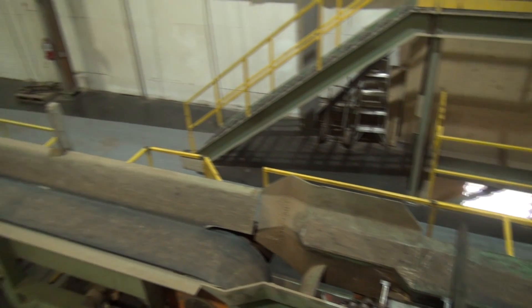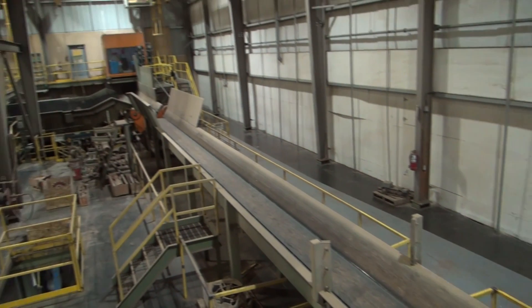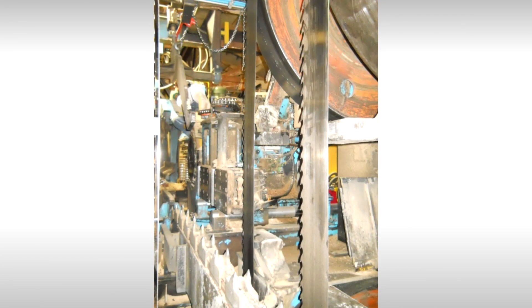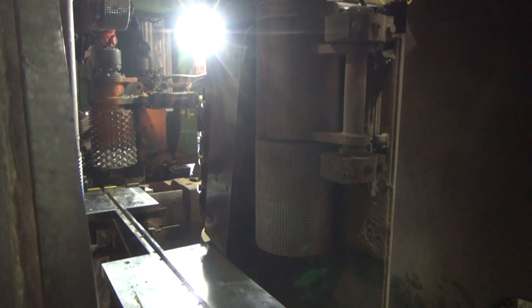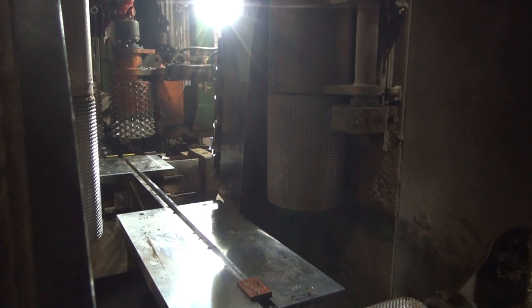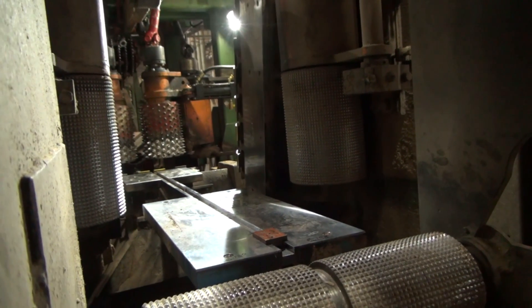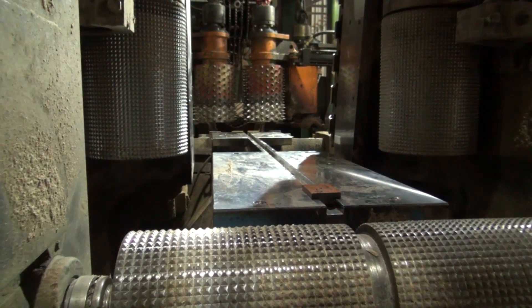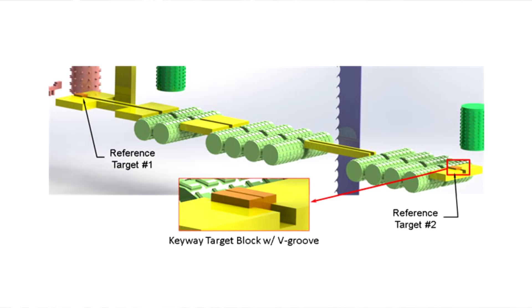On every machine center, we start by defining a particular machine characteristic as good. Sometimes that's a rail or a sharp chain, possibly some points on a frame or subframe, or some other appropriate machine feature. For this project, a keyway on the lower anvils provides the reference datum. All other machine components will be aligned to this feature.